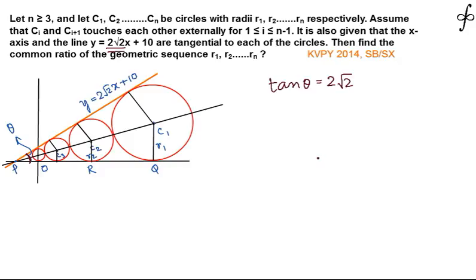We need to find the common ratio of the geometric sequence, so we plan to find the ratio r2/r1. From the figure, this particular angle should be half of θ, so this angle has to be θ/2.